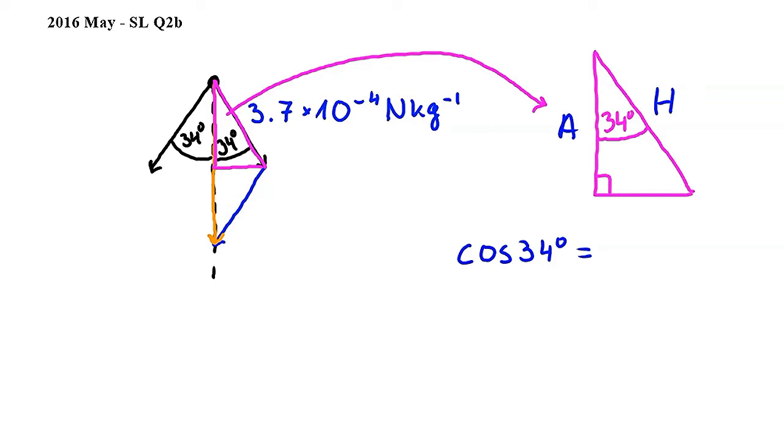We don't know the adjacent, so I will label it as A, divided by the hypotenuse which is 3.7 times 10 to the power of negative 4.